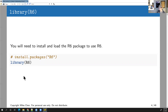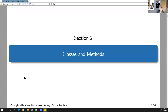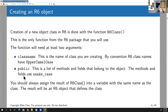To use the R6 system, you have to install the R6 package and call library(R6). Inside the R6 package, there's really only one function you're going to use: the R6Class function. That's used to define a new object class. When you define a new object class, you're going to need to define at least two things: a class name and a list of public fields and methods.